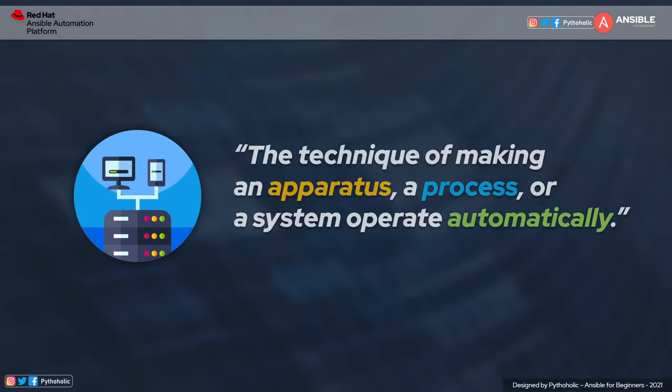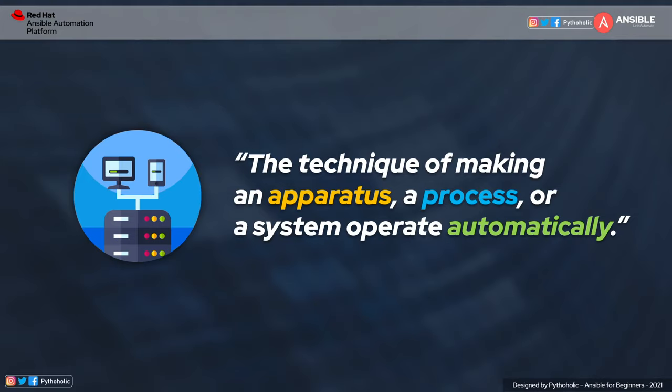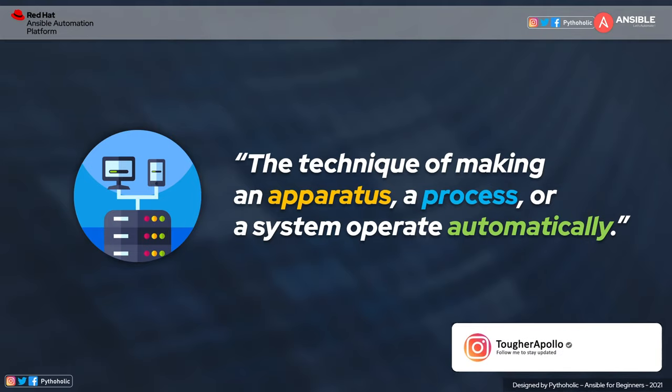When we think of automation, there is an instant idea that pops up about how things that were previously done manually have been turned into a cycle of events or steps to achieve the same outcome, but with less human intervention. As it is rightly put, automation is the technique of making an apparatus, a process, or a system operate automatically.